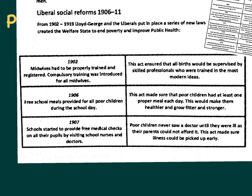Looking at the new laws the Boer War triggered: in 1902, laws were passed about midwives - they had to be properly trained and registered, not just anyone who had experienced births before. This massively reduced the infant mortality rate. In 1906, the Free School Meal Act meant all poor children were given meals at school during the day. In 1907, schools began providing free medical checks, school nurses and doctors for their students.